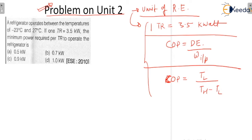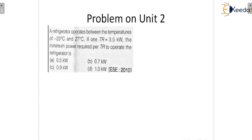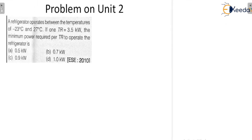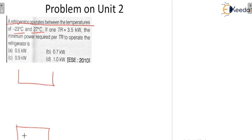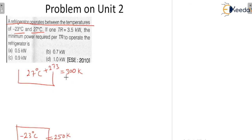In this problem, a refrigerator operates between two temperatures. The first temperature is minus 23 degrees Celsius, and the second — the higher temperature — is 27 degrees Celsius. You should convert these into Kelvin by adding 273, giving 300 Kelvin for the higher temperature and 250 Kelvin for the lower temperature.